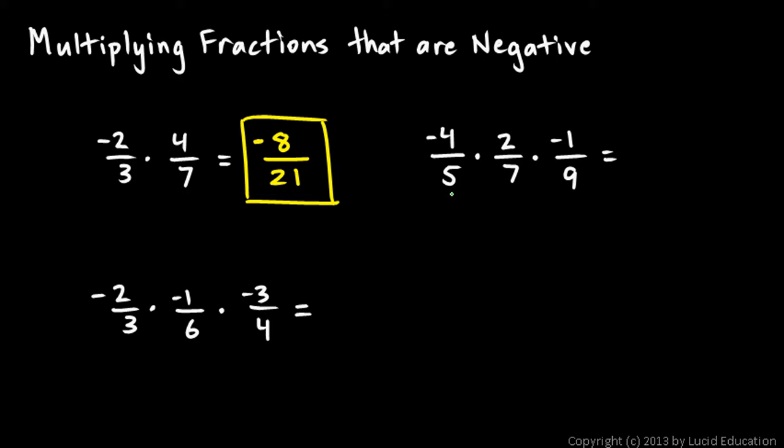Negative 4 fifths times 2 sevenths times negative 1 ninths. I know that two negative signs multiplied together will cancel out. So, I'm just going to basically ignore the negative signs and do the multiplication.